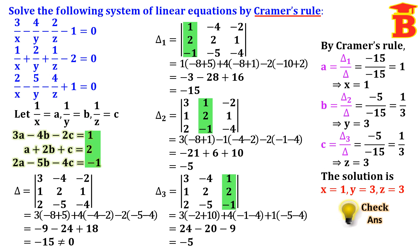We can check the answer. Taking the second equation and substituting: x value is 1, so 1 by 1 is 1; y value is 3, so 2 by 3; z value is 3, so 1 by 3. We get 1 plus 2 by 3 plus 1 by 3, and 2 by 3 plus 1 by 3 equals 3 by 3 equals 1. So 1 plus 1 is 2, and 2 minus 2 equals 0, matching the right hand side. The equation is satisfied, therefore the answer is correct. Thanks for watching.